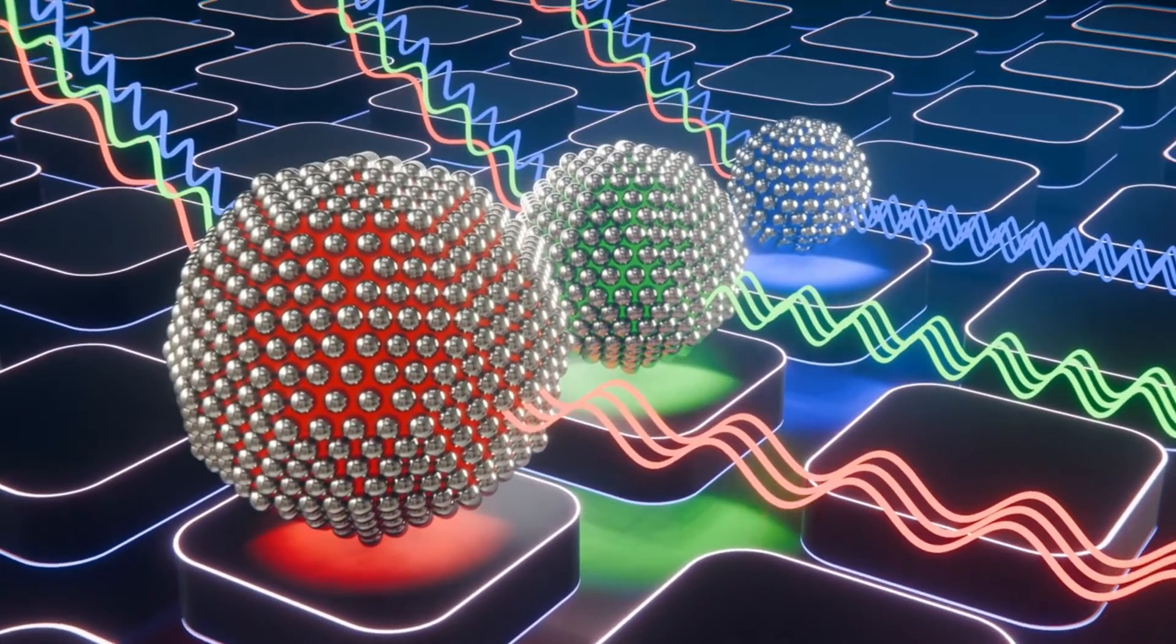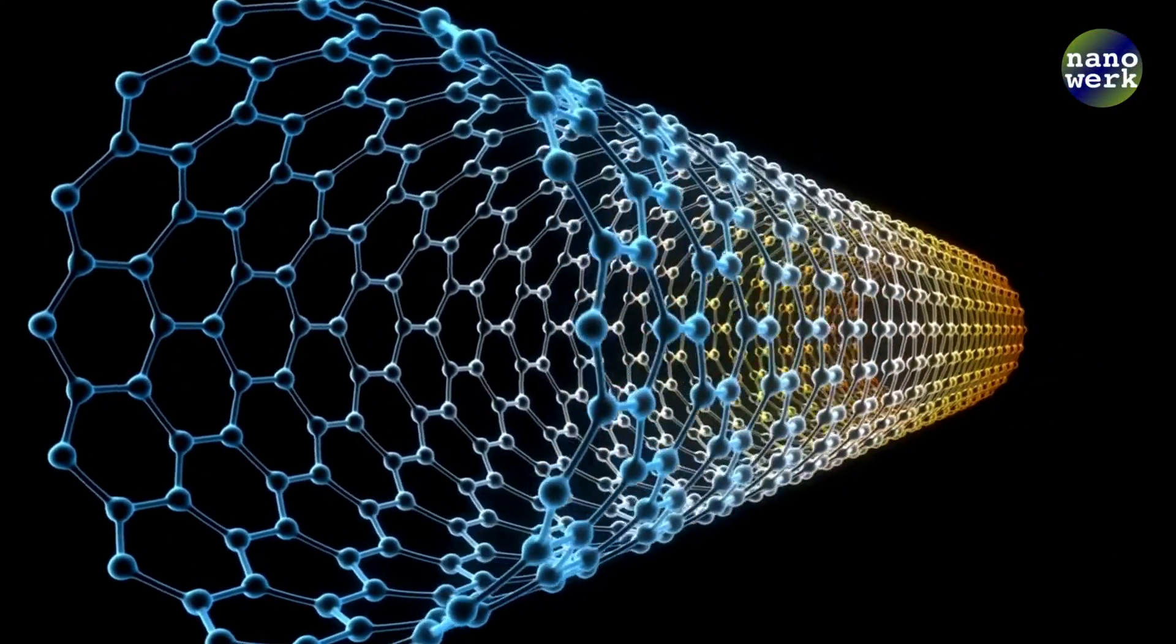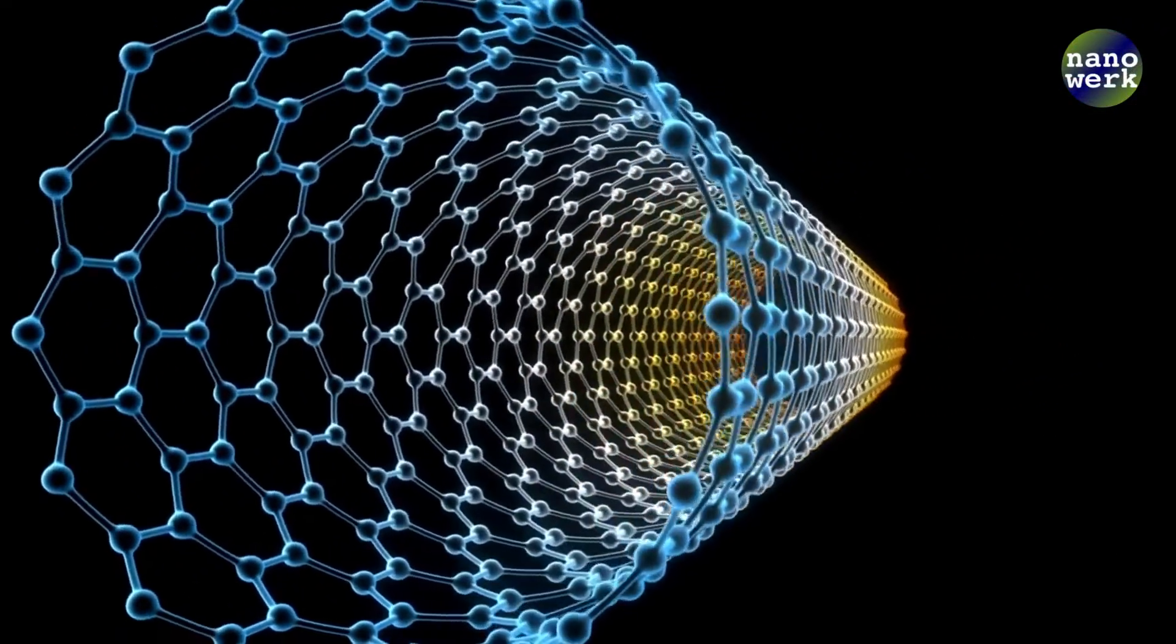Now picture nanotubes. They're like long thin cylinders where electrons can move back and forth but not in other directions, so we call them one-dimensional.